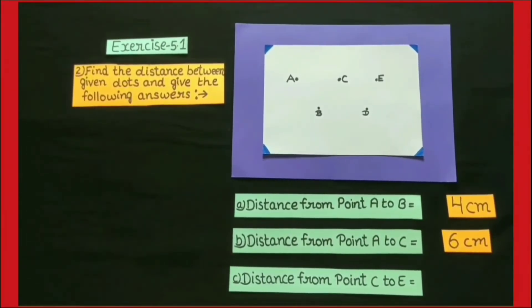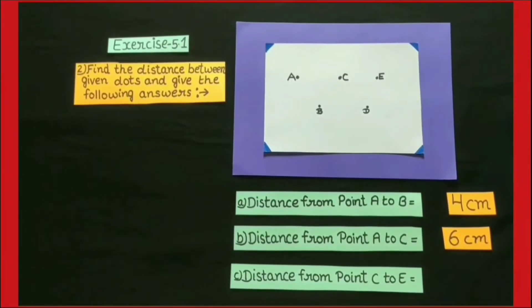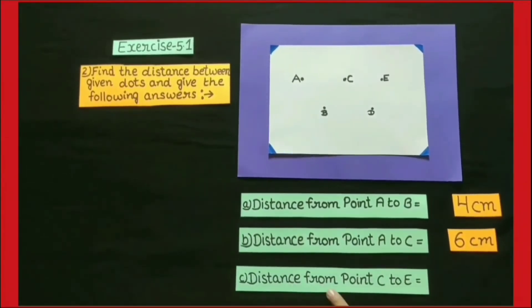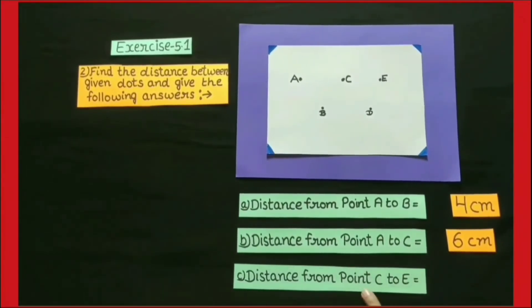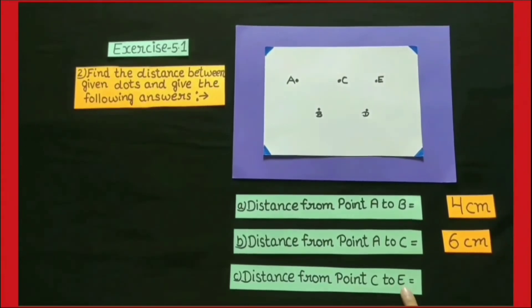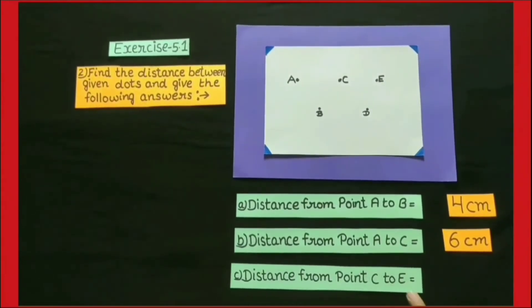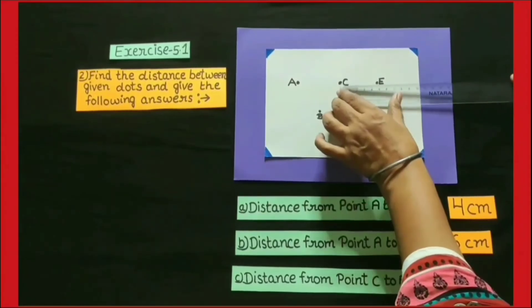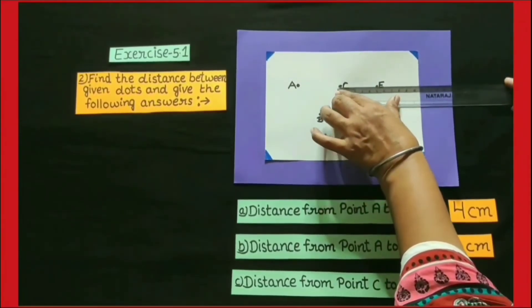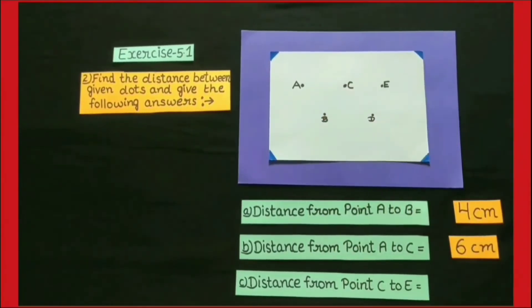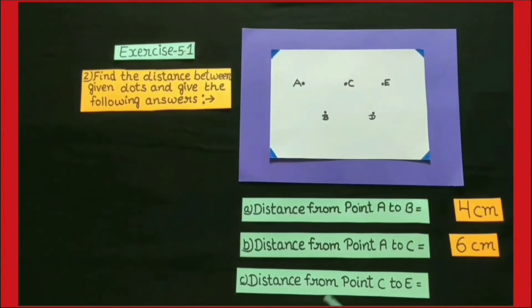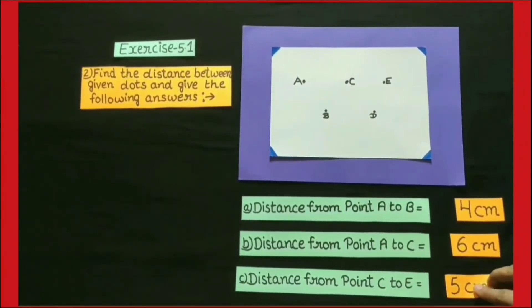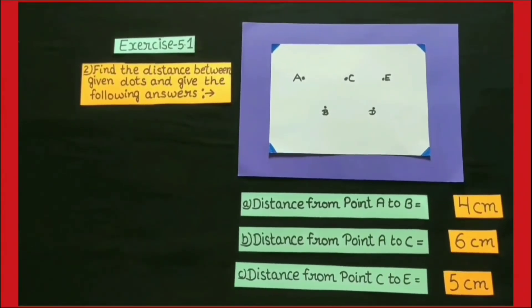Next question: distance from point C to E. In this question, we have to find out the distance from point C to E, and we find this distance by measuring it with a scale. The distance is 5 cm, and the answer to this question is 5 cm.